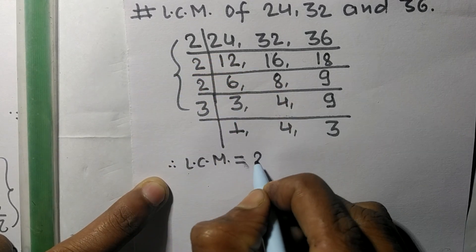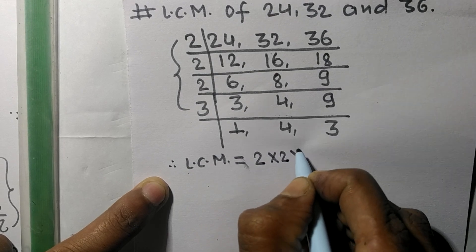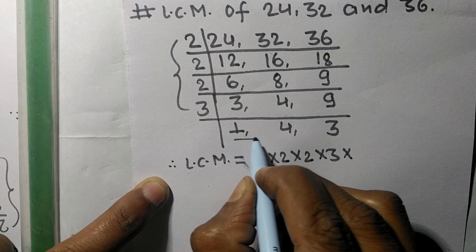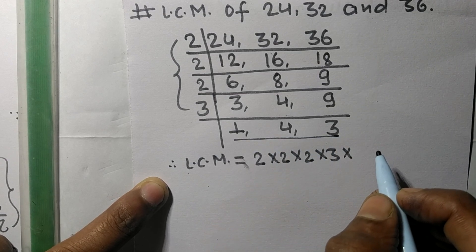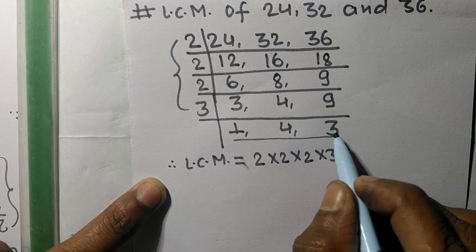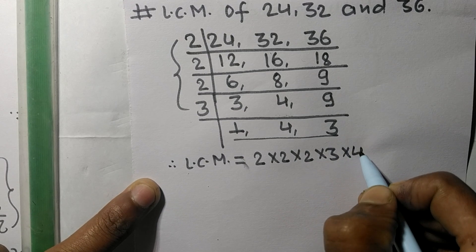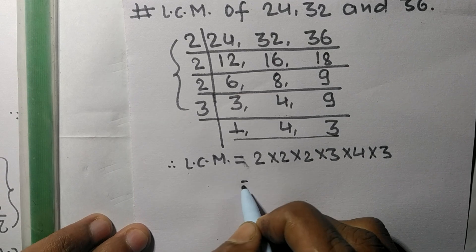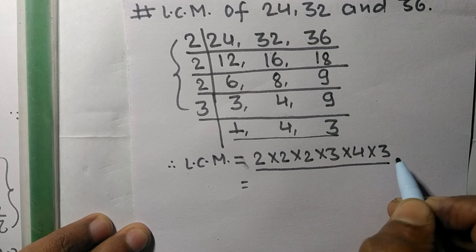And from this side we choose the numbers greater than 1, that is 4 and 3, so multiplied by 4 and 3. So by multiplying all these numbers we get 288.